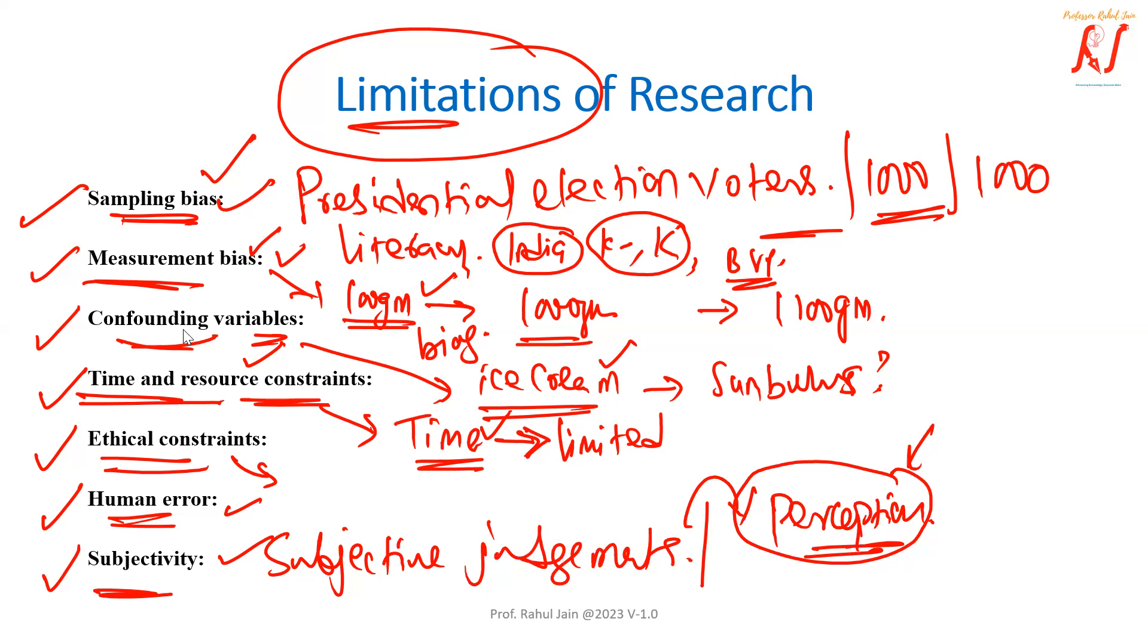Because subjectivity is a person's own uniqueness. Subjectivity is nothing but any person's uniqueness which influences their perceptions. And it is not 100% necessary that, let's say researcher 1 is there, researcher 2 is there, so whatever researcher 1 is perceiving on particular topic, researcher 2 does not guarantee to understand exactly 100% idea of researcher 1. So subjectivity leads to the interpretation of the same data differently. That is a limitation.